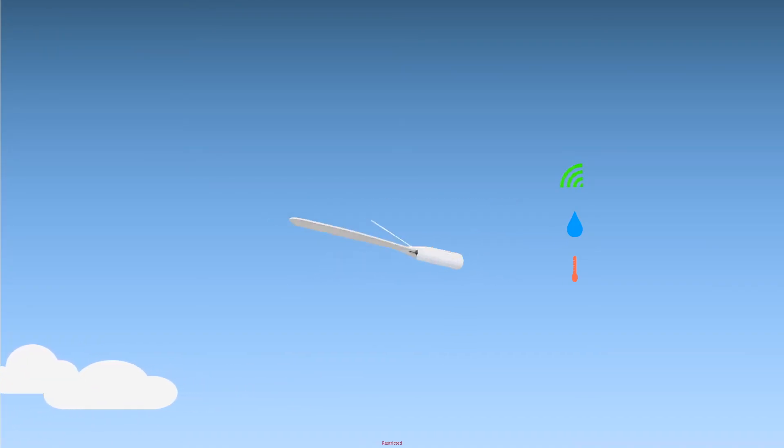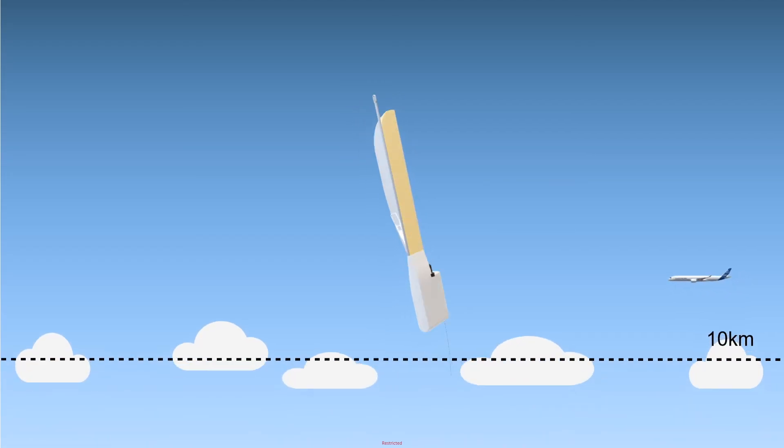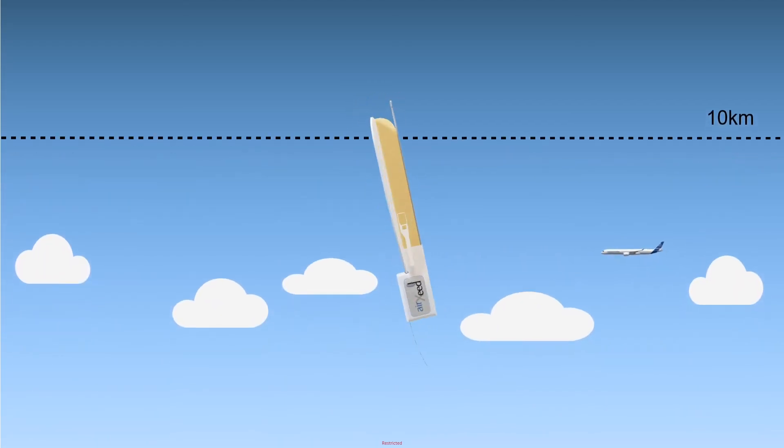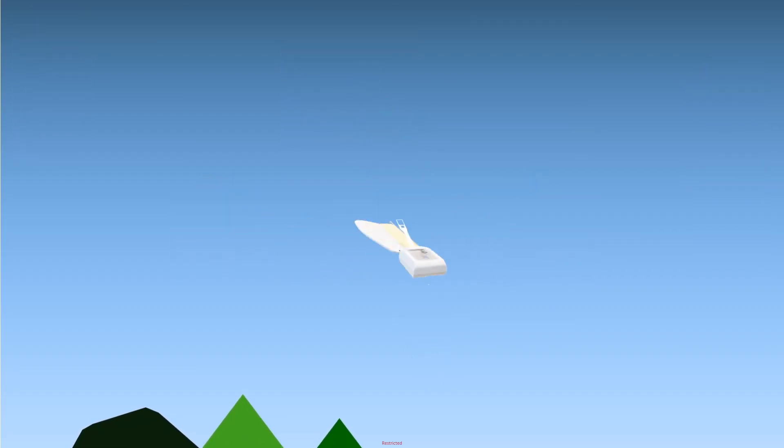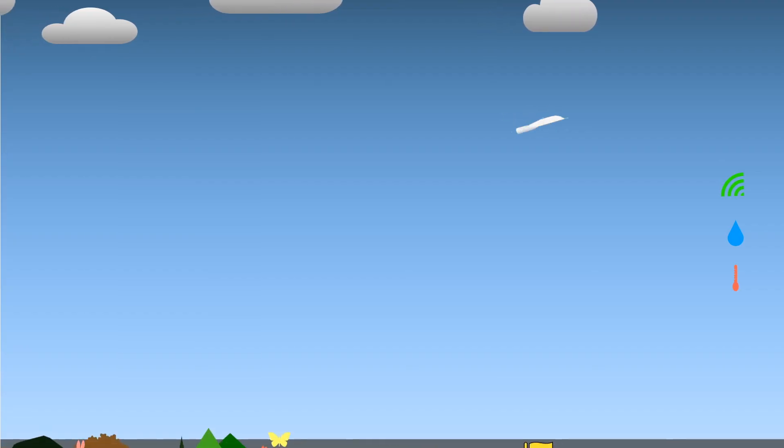Based on wind speed and direction, the onboard controller uses machine learning to decide where to land. When passing through aircraft cruise altitude, it automatically enters a dive to minimize risk of collision. It resumes auto-rotation and lands at the closest collection zone.